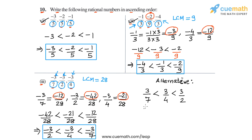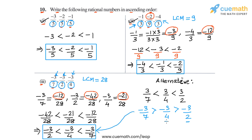So minus 3 by 7 becomes greater than minus 3 by 4, which becomes greater than minus 3 by 2. Writing these in ascending order, we get: minus 3 by 2 is the smallest, then minus 3 by 4, then minus 3 by 7. This is an alternative way to arrive at the same order of numbers, completing part 3 and question number 10.